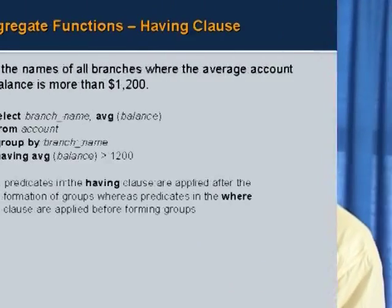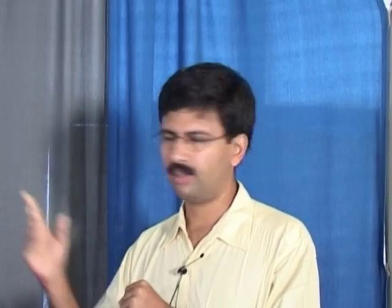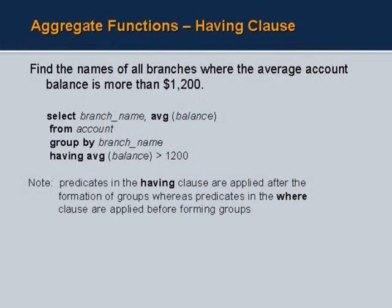The last topic before the break is the HAVING clause. The HAVING clause lets you filter groups after the GROUP BY has been applied — unlike the WHERE clause which filters individual rows before grouping. So the order of execution is: FROM → WHERE → GROUP BY → SELECT → HAVING → ORDER BY. The query example is: find the names of all branches...